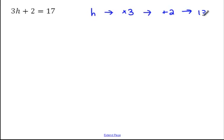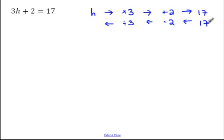We get an answer of 17. Now, just like we did in the last video, we're going to work backwards to find out what h is. We start with our answer, which is 17, subtract 2, and divide by 3. So 17 subtract 2 is 15, divide that by 3, and you get an answer of 5. So the solution here is h is equal to 5.